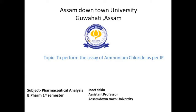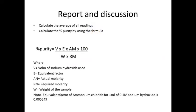So in this video we will see about the report — what will be the report, how to calculate the percentage purity. We have already performed the titration three times, and we need to calculate the average of all readings. From there we can calculate the purity using this formula.